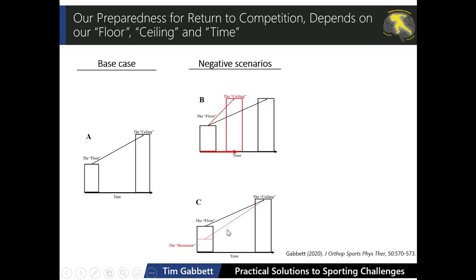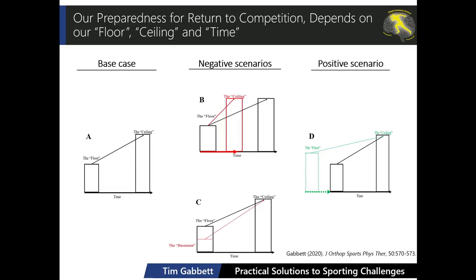There are positive scenarios and ways to solve this. The best solution is raising the floor — loading early. If an athlete is in off-season, try to maintain loading throughout that period. If an athlete is injured in rehab, keep their load ticking over; don't let their capacity fall to the basement. When we raise the floor, it bridges the gap between the floor and the ceiling. Athletes need less time to reach the ceiling, and that gentler slope reduces injury risk. When athletes get to the ceiling, they're able to perform at a very high standard.